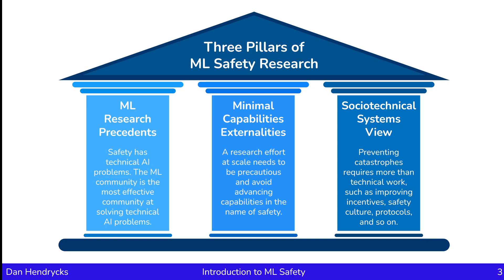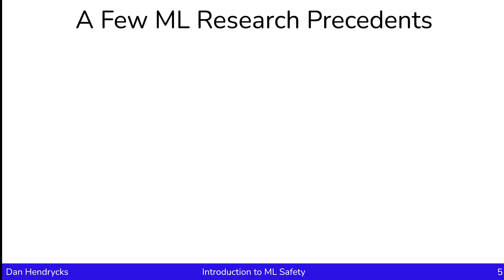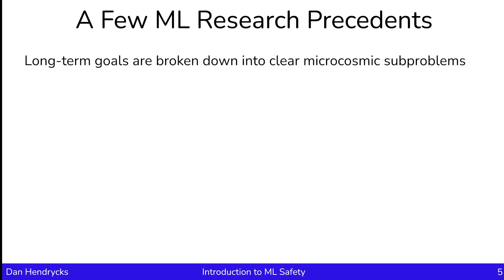Preventing catastrophes requires things such as improving incentives, safety cultures, protocols, and so on. Now let's first talk about machine learning research precedents. One research precedent is that long-term goals are broken down into clear microcosmic subproblems. The problems are not left nebulous, and the problems are made tractable — they're not trying to consider the fullest version of a problem.